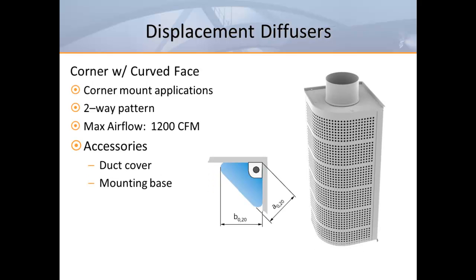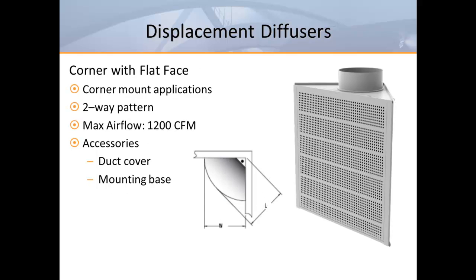Now we look at units designed to fit into corners. One model has a curved face that creates a two-way air pattern. Another corner model may look austere at first but would probably look best in a flush-mounted installation. Oddly enough, even though this unit has a flat face, it actually provides a two-way air pattern.